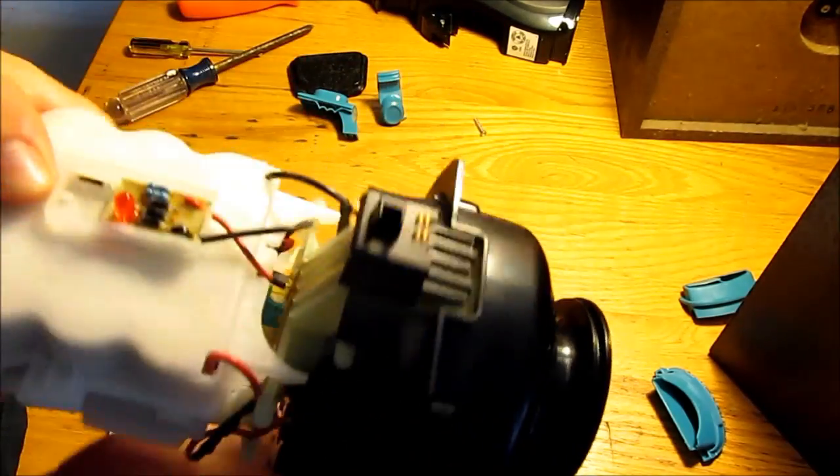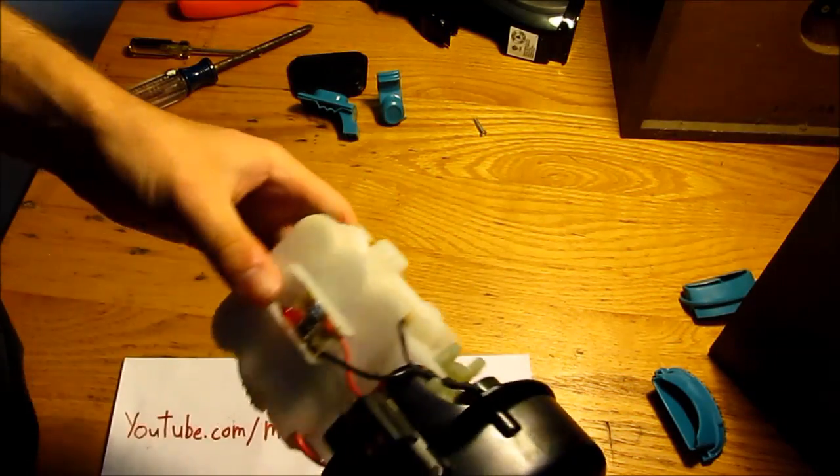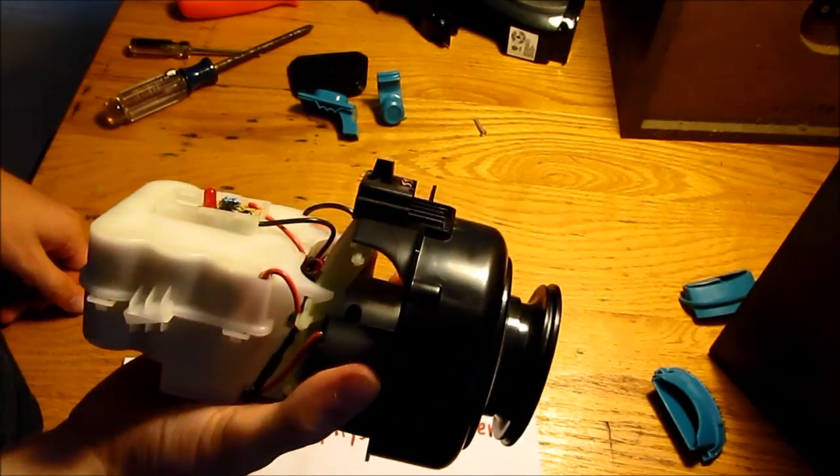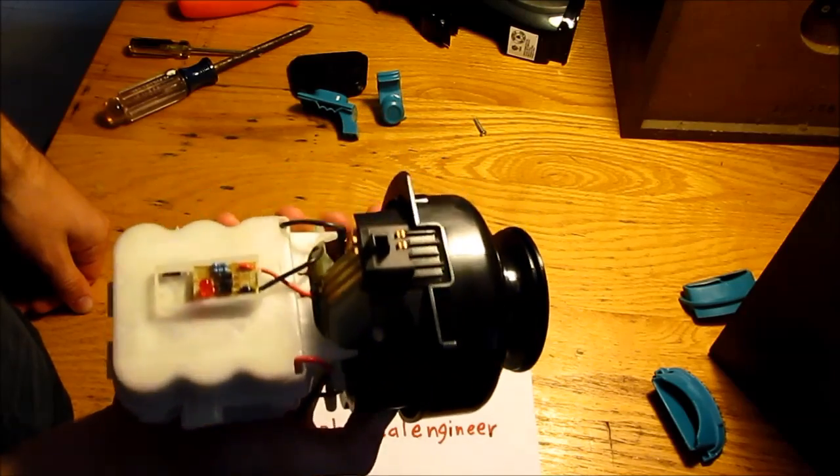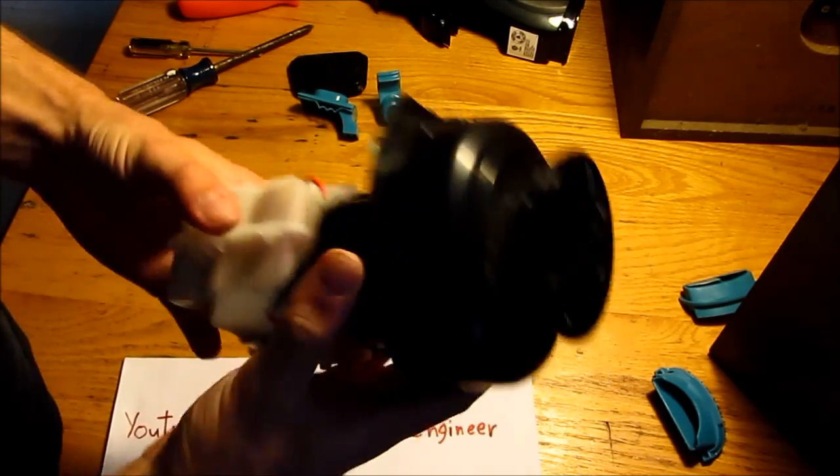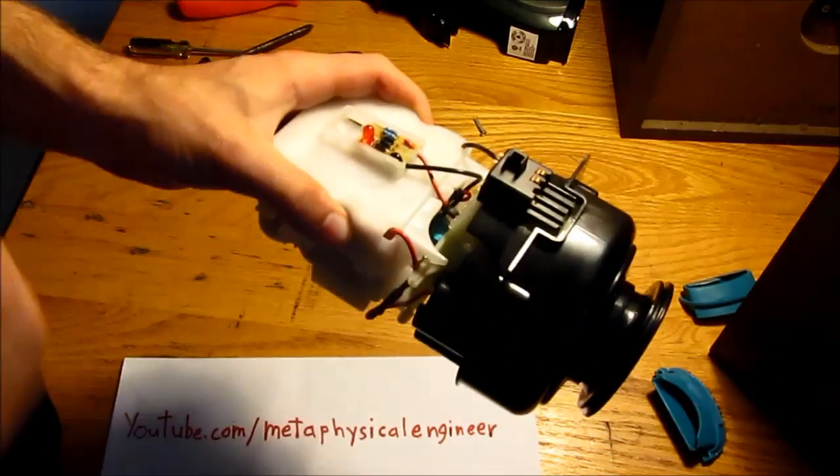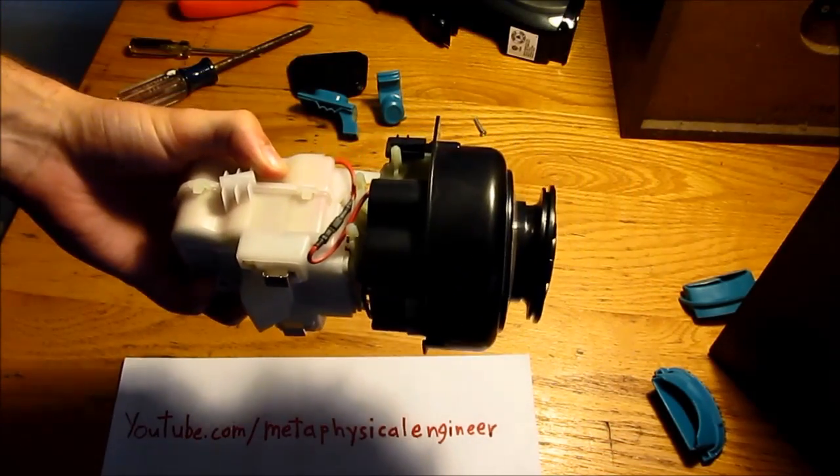So that is what is inside a more modern, bit of a higher quality, handheld, battery-powered vacuum cleaner: motor, impeller, battery pack, and a switch. That's it. Thanks for watching.